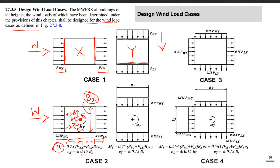Similarly, for the Y direction, you apply 75% of the loading on the windward and leeward sides and simultaneously apply a torsional moment with eccentricity equal to 15% of the building dimension in the perpendicular direction. For Y direction, By becomes the perpendicular direction dimension, so you take 15% of that as the eccentricity in the Y direction. Again, that can be on one side or the other side of the center of mass — positive or negative. So for Y, it also splits into two further cases: one with positive ey and one with negative ey.